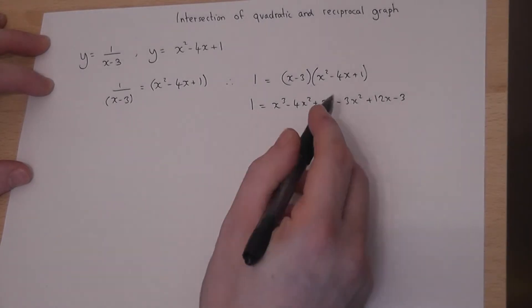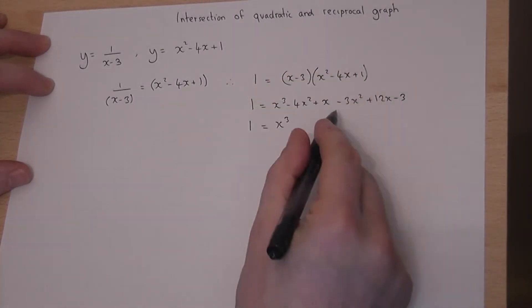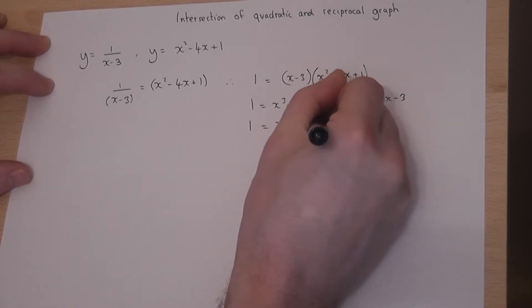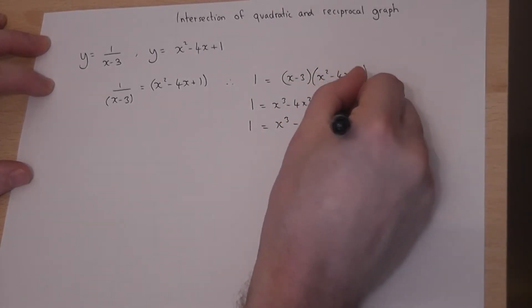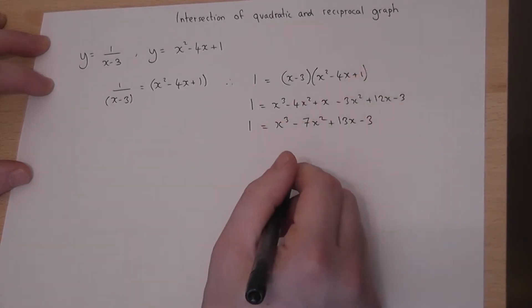If I then simplify, 1 equals x³ - 7x² + 13x - 3, then set equal to 0,